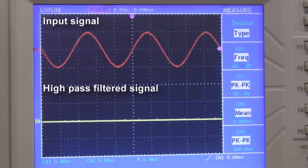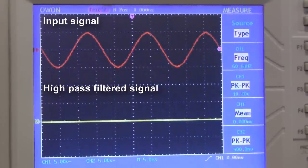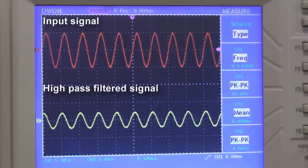So, with 60 Hz on the input, the high-pass filter is barely letting anything pass. At 10 kHz, about half the signal is being let through. You can also see that there's a phase shift in the signal.